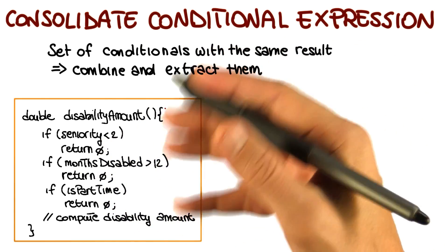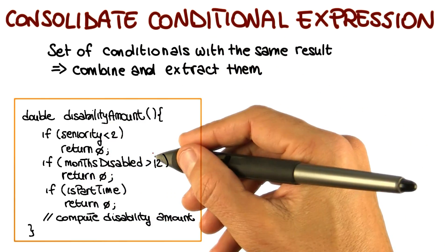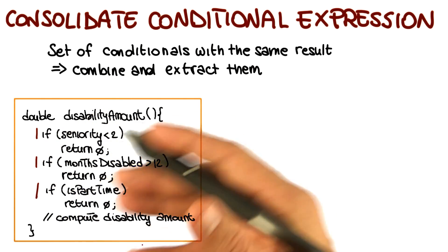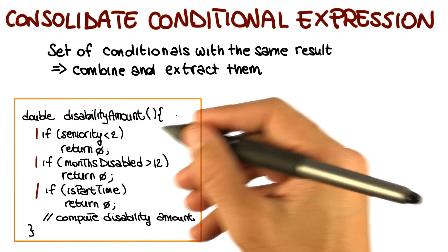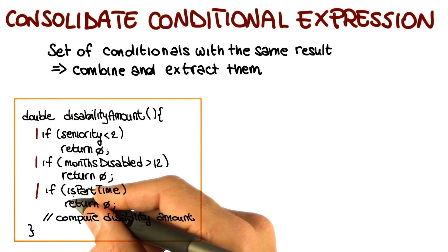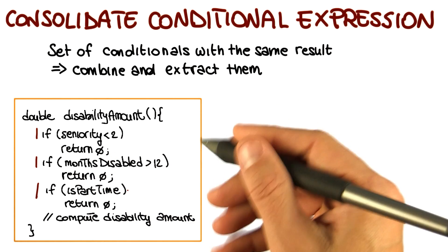So what I will do if I apply the consolidated conditional expression to this method is that I will take these three conditionals and put them together by saying basically that if seniority is less than 2, or months disabled is greater than 12, or is part time is true, then the return should be zero.